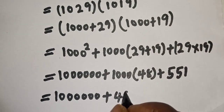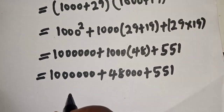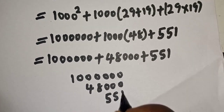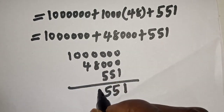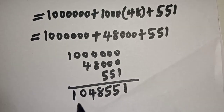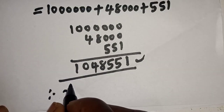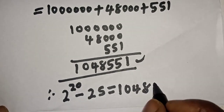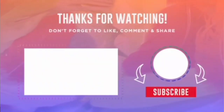That gives us 48 thousand, plus 29 times 19. Now let's add everything together: 1,000,000 then 48 thousand, and here is 551. This gives 1,048,551. Therefore 2 raised to power 20 minus 25 is equal to 1,048,551. If you enjoyed the class please don't forget to like, share, comment and subscribe. Thank you.